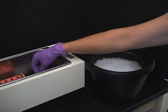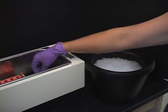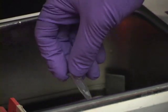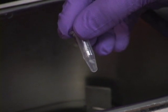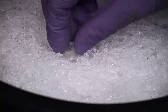Flash thaw your binding protein at 37 degrees, leaving a small amount of ice in the tube. Quickly place on ice.